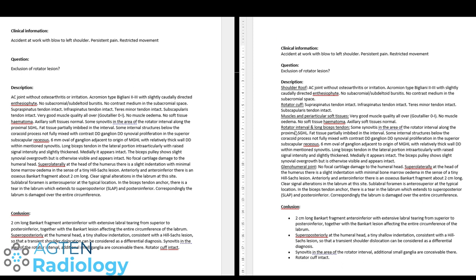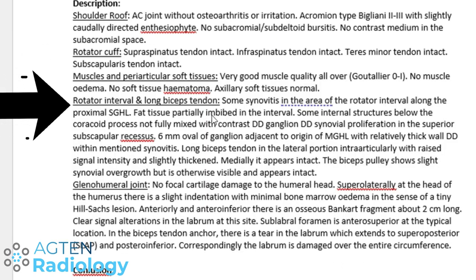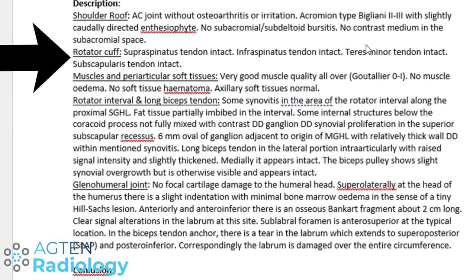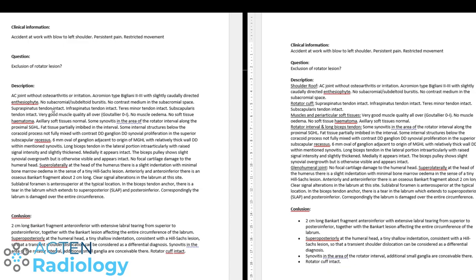Whereas with subheadings, there's a clear subheading like 'rotator interval' so I can just go there and read what's going on. Or if I want to know about the rotator cuff tendons, I have one clear paragraph with just the tendons — that's all I need. Without subheadings, nobody really knows where to look. So that's very, very important: use paragraphs and use subheadings.